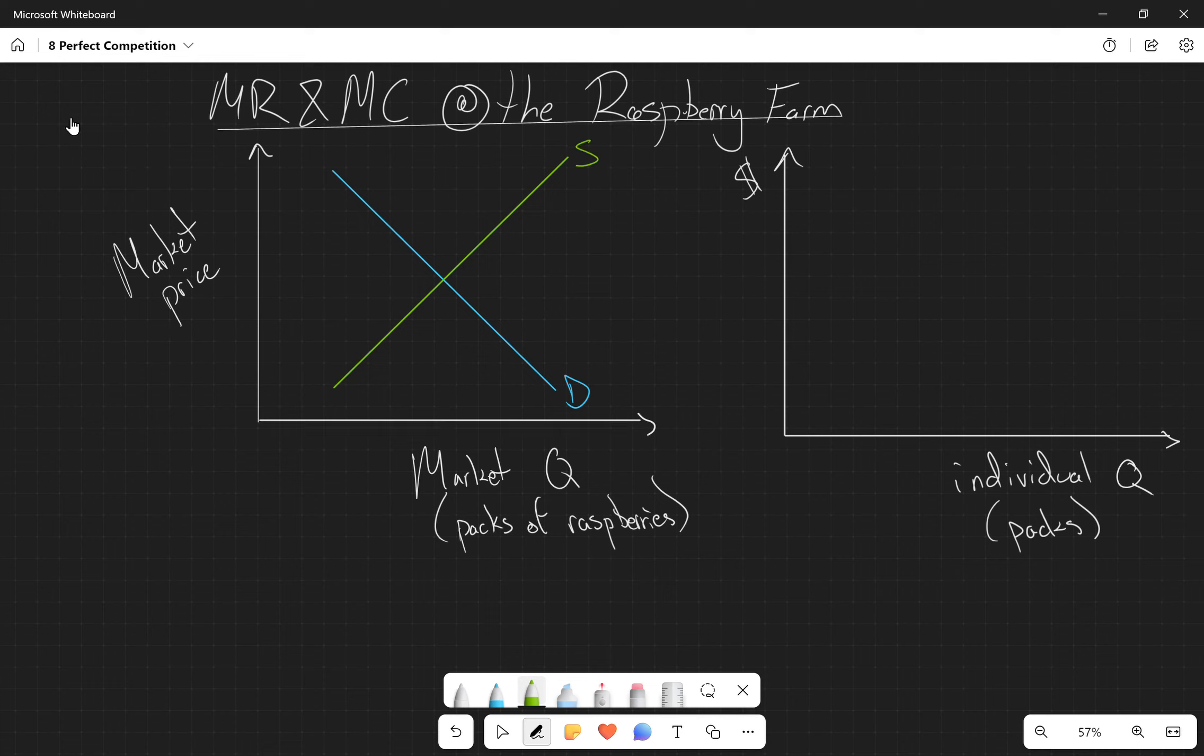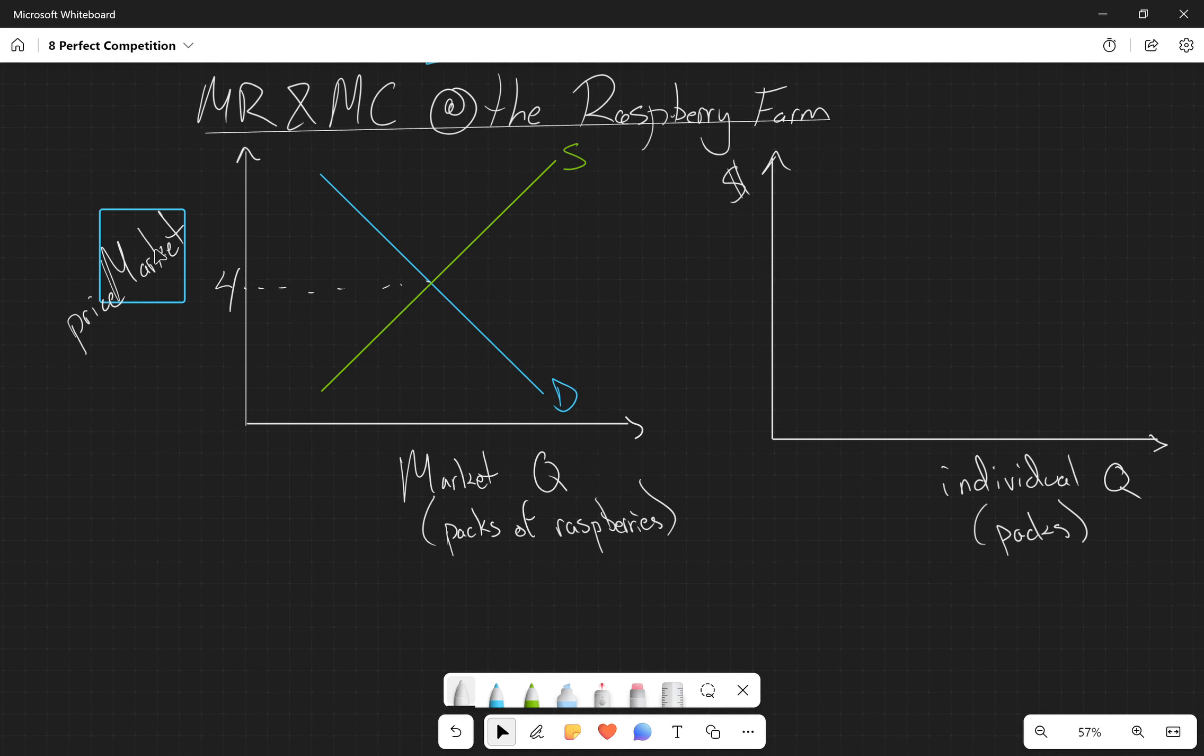So the market price, the equilibrium here is going to be four dollars for a particular example. Four dollars is going to be our P star. We also are given a market equilibrium, it's not really important, we'll put it here just for completeness. The equilibrium price of the raspberries is determined through the interaction of the supply and demand for the market for raspberries.